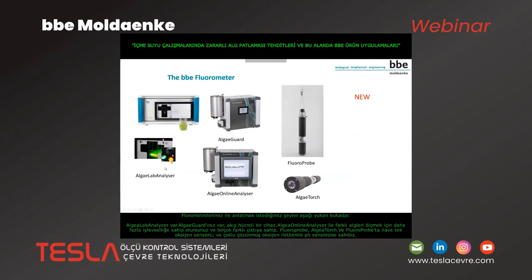That is more or less what we want to tell you. Just some examples of our fluorometers: we have the lab analyzer, the algae guard — a flow-through instrument with a pump — the algae online analyzer with more functionality to measure different algae classes with many different outputs available, the fluoroprobe, the algae torch, and the dissolved oxygen, conductivity and pH sensor available with this instrument.